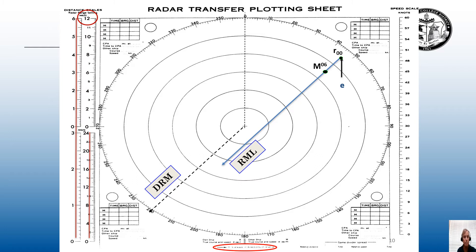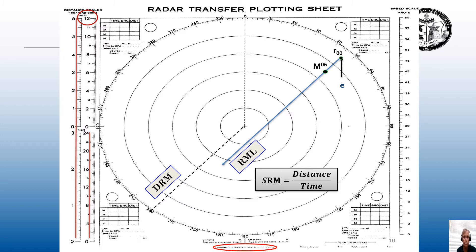We can find speed of relative motion — there are two ways to do this. One way: get your dividers or compass, measure the distance between R00 and M06, measure that distance on the 12-mile scale, then divide by six minutes. The easier way: measure the distance between R00 and M06, take it to the 12-mile scale — if it's 2.3 miles long, the relative speed is 23 knots. That is the relative speed of the contact, not the true speed.